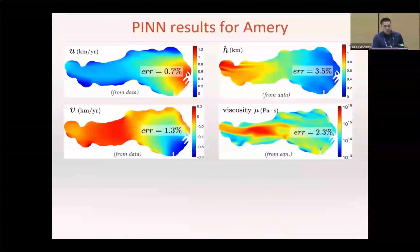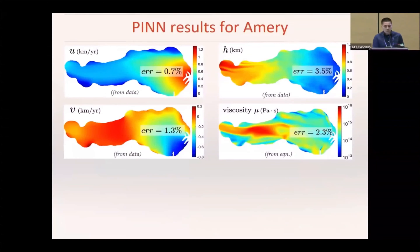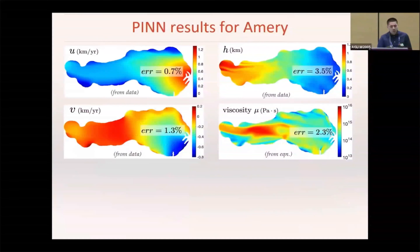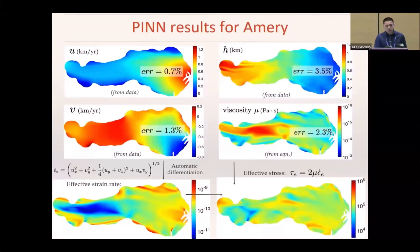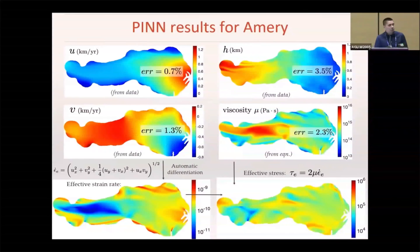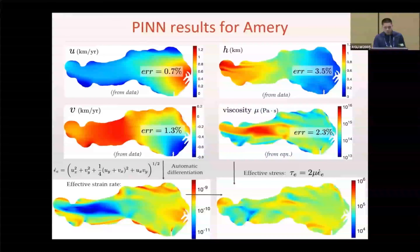Here, for example, we show the velocity, thickness, and the viscosity obtained from PINNs for the Mertz ice shelf, which shows good accuracy. From these results, we can directly get the effective strain rate and stress, and now we have the full information to examine the ice shelf rheology.